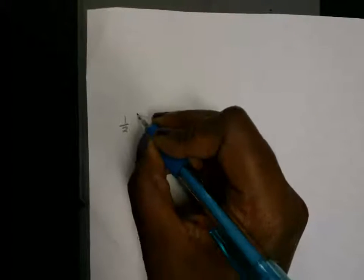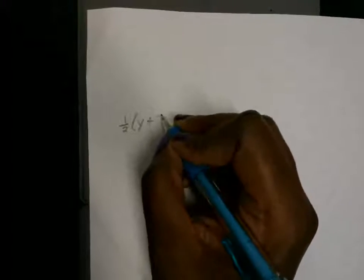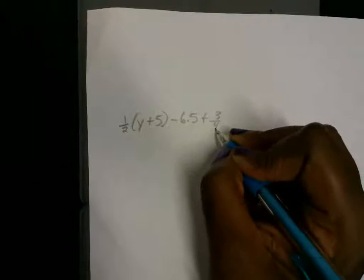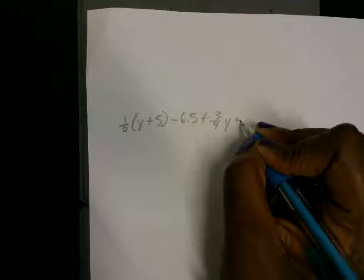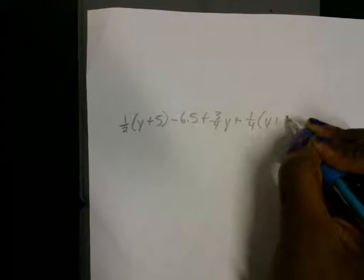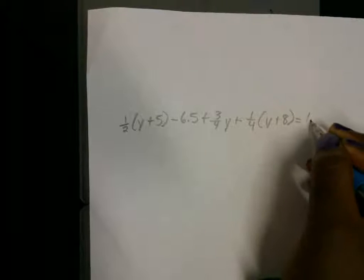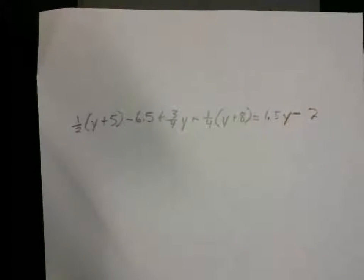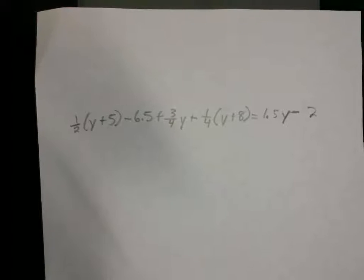Alright, so this is what it looks like: one-half parentheses y plus 5 minus 6.5 plus three-fourths y plus one-fourth parentheses y plus 8 is equal to 1.5y minus 2. So when you have a long problem like this, you do one step at a time. It's very important that you do just one step at a time.